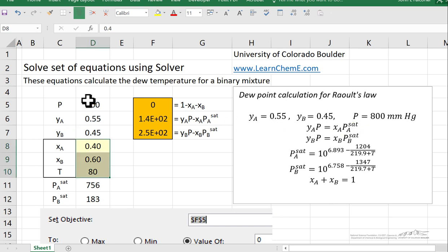So we've entered in the spreadsheet the known values, and then our unknowns where we make initial guesses. So these are initial guesses. We have an equation that calculates PA Sat and PB Sat at this temperature.